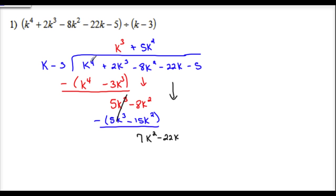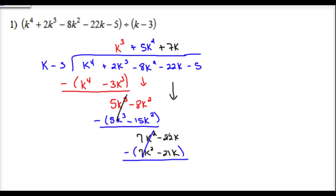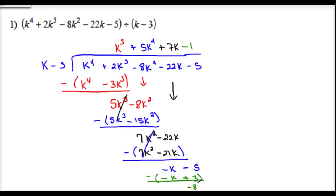Bring down minus 22k. k goes into 7k squared how many times? Positive 7k times. So this becomes 7k squared minus 21k. Subtract — my 7k squareds simplify. Negative 22k plus 21k gives me negative k minus 5. k goes into negative k how many times? Negative 1. So it becomes negative k plus 3, leaving me with a remainder of negative k minus 3, which is negative 8. So my remainder is negative 8.